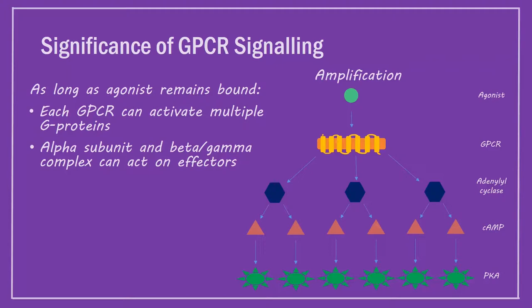Alpha subunits and beta-gamma complexes can then each act on different effectors, often leading to production of many second messengers. This amplification is important in phototransduction, for example, because it helps increase our sensitivity to low light levels.